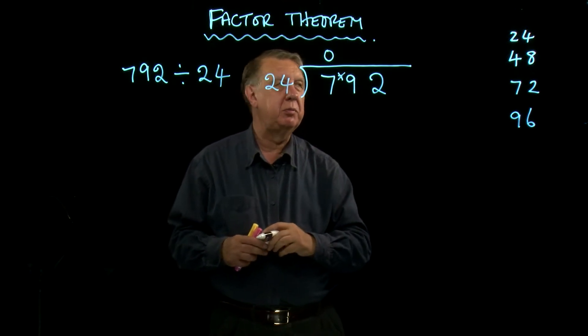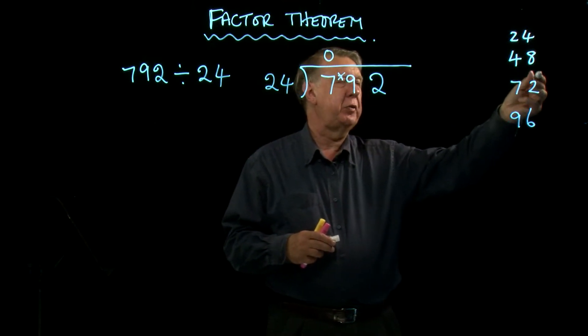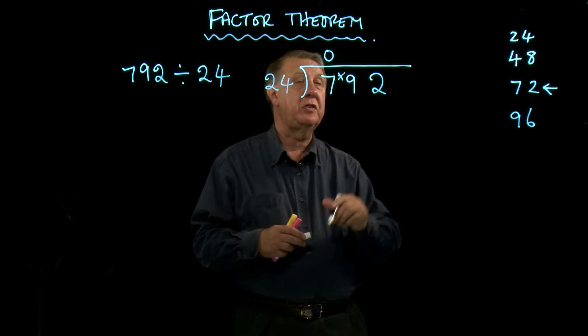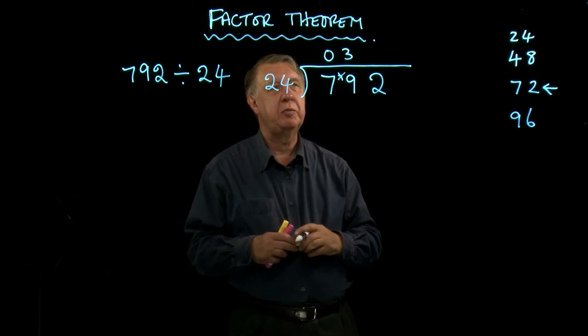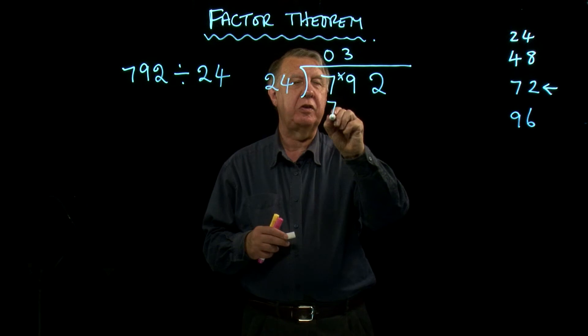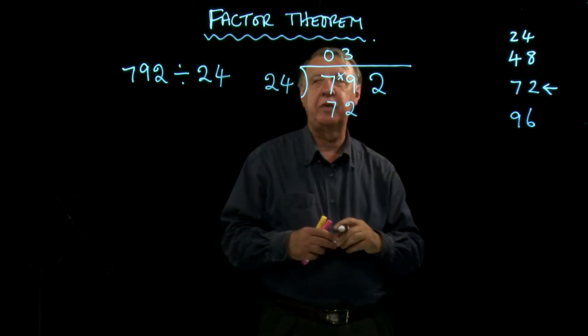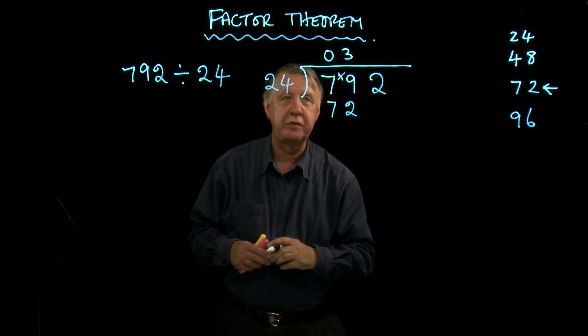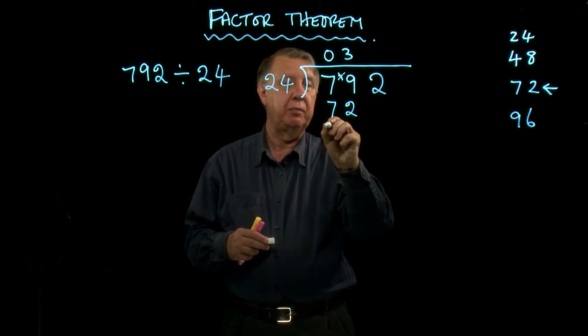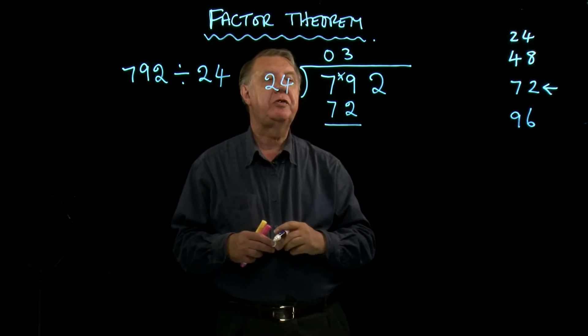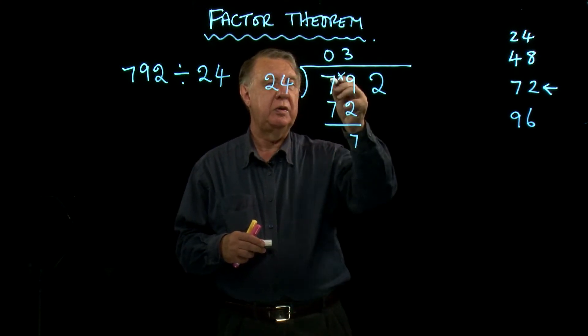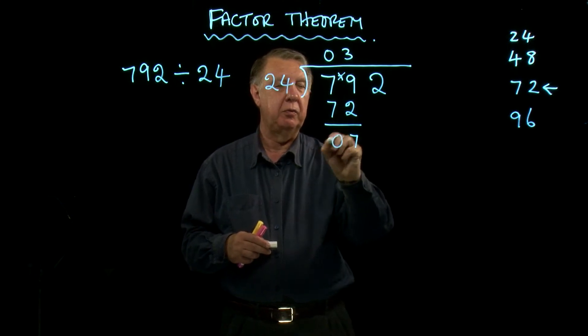Now 24 into 79 is the next pair of numbers. Well, if we look at our 24 times table, we can get down as far as 72, that's 3 times. What are 3 times 24? They're 72. You write what 3 times 24 is underneath and you subtract. 9 take away 2 is 7. 7 take away 7 is nothing.